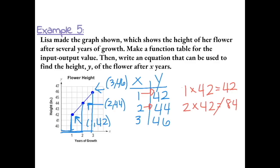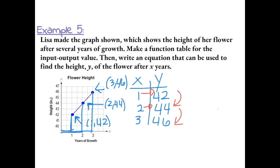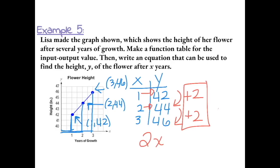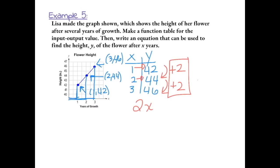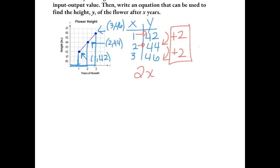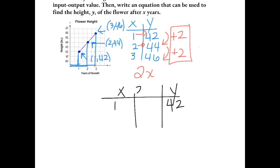When we can't find a direct pattern between input and output values, we look for a pattern between our output values. From 42 to 44 we add 2, and from 44 to 46 we add 2. So that means 2 will be multiplied with our input value x. Now that we have the first part of our equation, 2x, we need to figure out what else to add to get our output values. Our first input is 1, and we want to get to an output of 42.